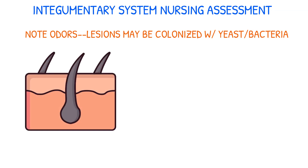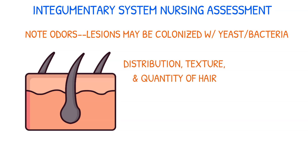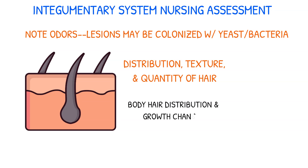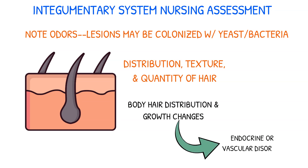Inspection of the hair should include an examination of all body hair, noting the distribution, texture, and quantity of hair. Changes in the normal distribution of body hair and growth may indicate an endocrine or vascular disorder.